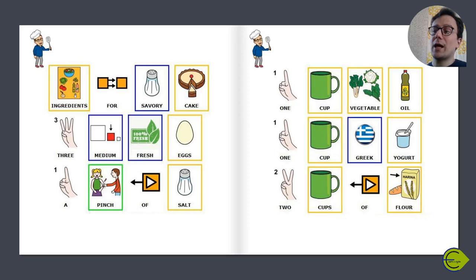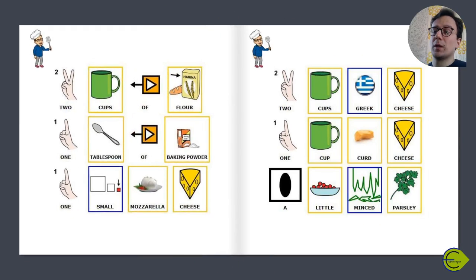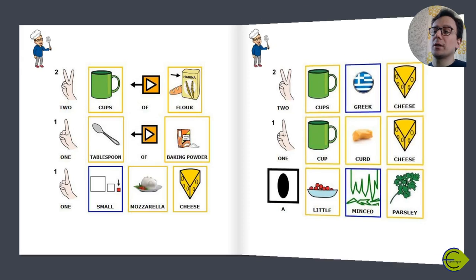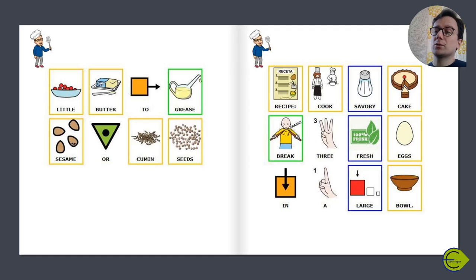A pinch of salt, 1 cup vegetable oil, 1 cup Greek yogurt, 2 cups of flour, 1 tablespoon of baking powder, 1 small mozzarella cheese, 2 cups Greek cheese, 1 cup curd cheese, a little minced parsley, a little butter to grease, and sesame or cumin seeds.